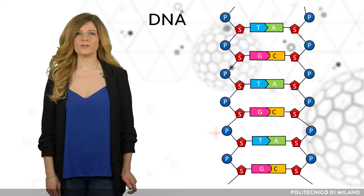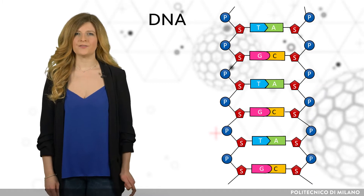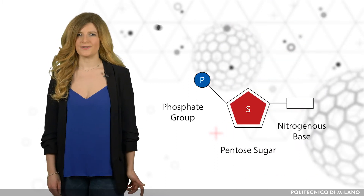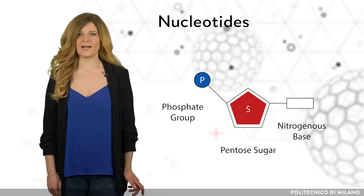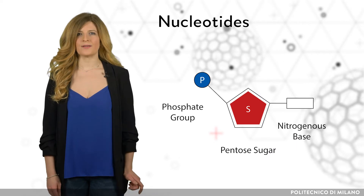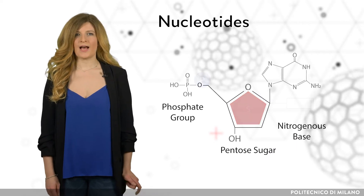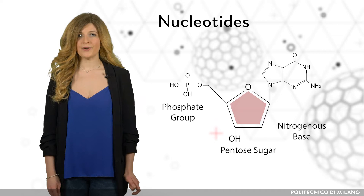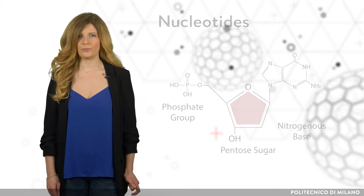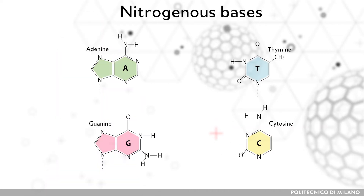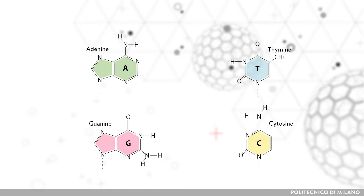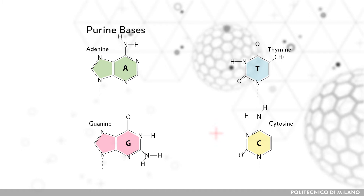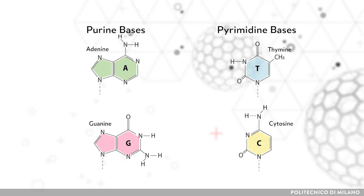As you know, DNA is a long chain of repeated units called nucleotides. These organic molecules are composed of three sub-units: a nitrogenous base, a 5-carbon sugar, and at least one phosphate group. The nitrogenous bases could be either purine bases — adenine and guanine — or pyrimidine bases — cytosine and thymine.